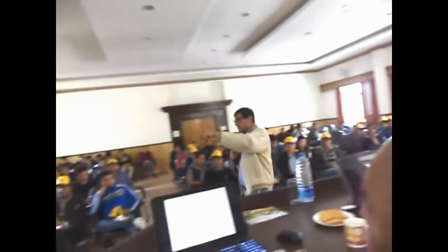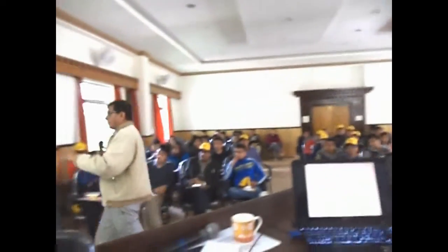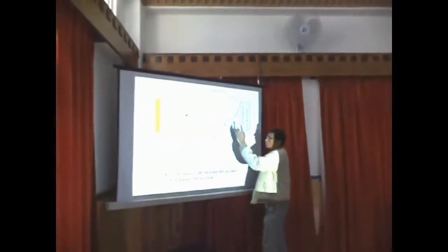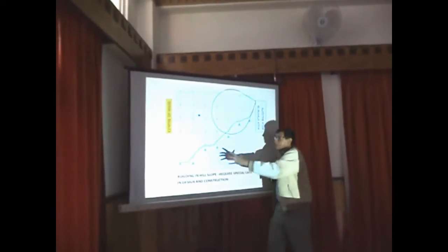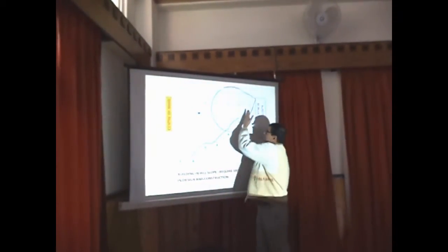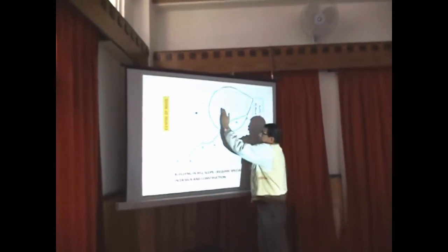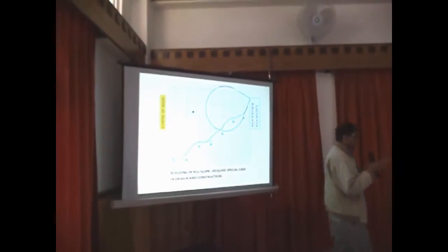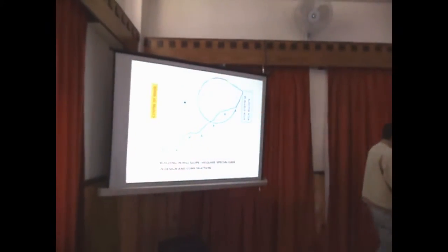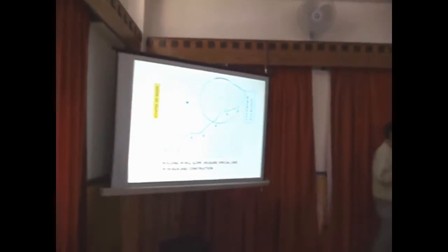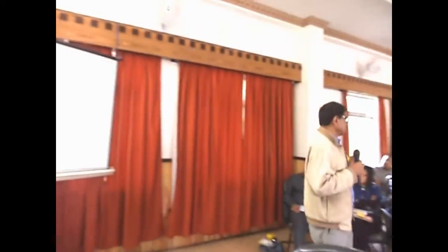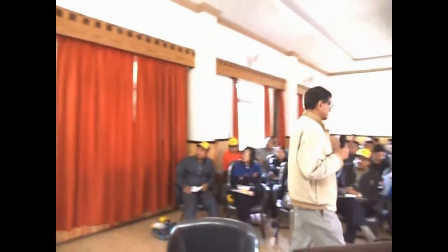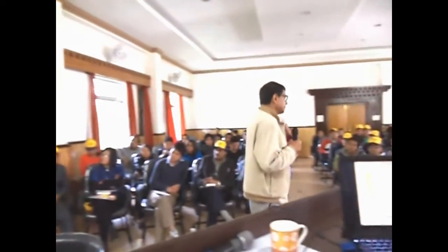The Centre of Rigidity and Centre of Mass must be aligned. If your columns are of the same size from end to end, it is fine. But if you become eccentric — if the column size is smaller on one side and larger on the other — then the Centre of Rigidity shifts. The eccentricity becomes a concern. Engineers have the tools to handle that, and we can go for that.